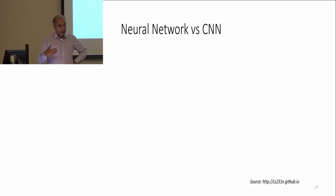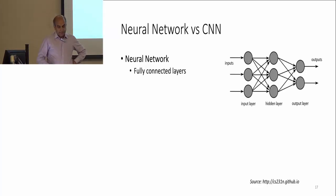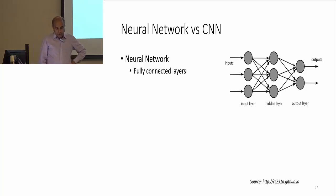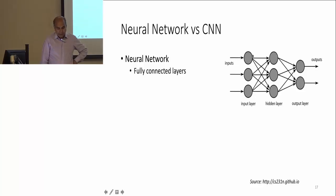A neural network is a fully connected layer. The simplest idea is that you have an input layer — say three inputs — then a hidden layer with three neurons, and an output layer with two neurons. These neurons are also called units. Each neuron in the hidden layer is connected to all neurons in the previous layer, which is why it's called a fully connected layer.